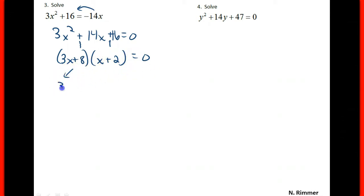This is set equal to 0, so either 3x plus 8 is 0, or x plus 2 is 0. This means that 3x is negative 8, or that x is negative 8 thirds, and this means that x is negative 2.